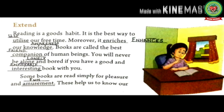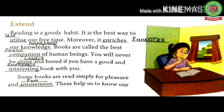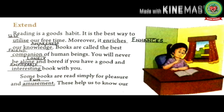Come to the next line. Books are called the best companion of human beings. Underline 'companion' — write down: friend. You will never be alone and bored if you have a good and interesting book with you. Underline 'alone' — write down: lonely. Underline 'interesting' — write down: enjoyable. If you feel alone and have no friends to play with, you should read your favorite book as books are the best source of entertainment.